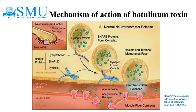Mechanism of action of botulinum toxin: after entry — either ingested, inhaled, or produced in a wound — botulinum toxin is transported via blood to peripheral cholinergic nerve terminals, most commonly at neuromuscular junctions, postganglionic parasympathetic nerve endings, and peripheral ganglia. It does not affect the central nervous system. Botulinum toxin binds to acetylcholine receptors on nerve terminals at the neuromuscular junction, resulting in blockage of acetylcholine release, leading to flaccid paralysis.